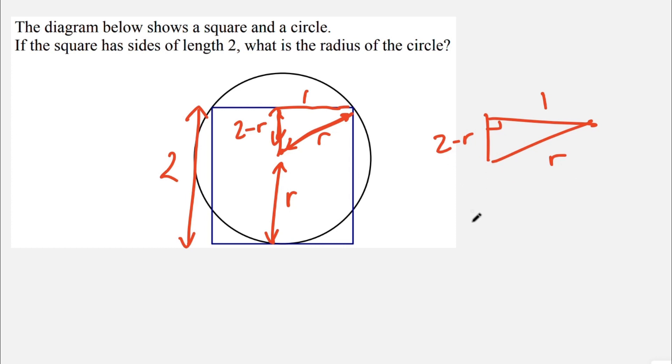So we can just use Pythagoras' theorem here. So we get 1 squared plus 2 minus R squared equals R squared, like so. And just expanding all of this, we get 1 plus 4 minus 4R plus R squared equals R squared.